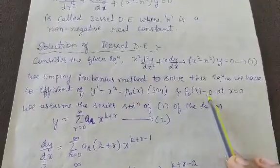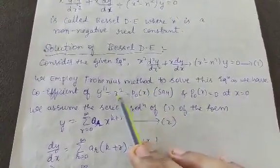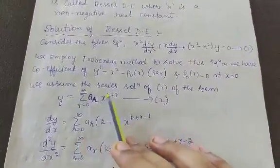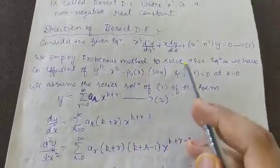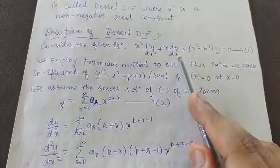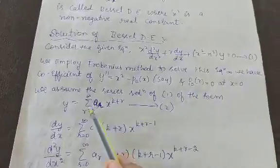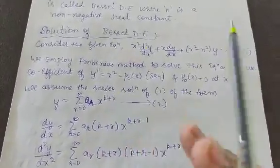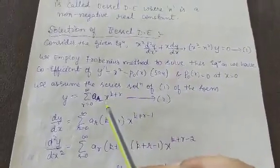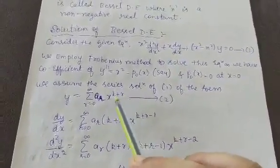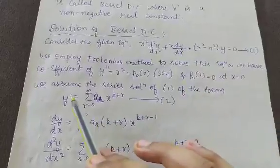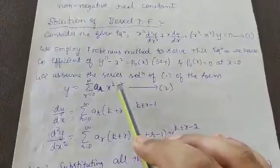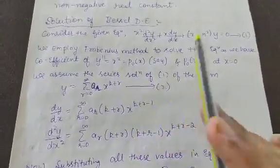Note that p₀(x) = 0 at x = 0. So we assume the series solution of equation 1 is of the form y = Σ (r=0 to ∞) aᵣ x^(k+r). This is the Frobenius method. Call this equation 2.